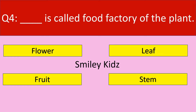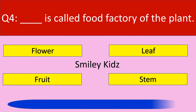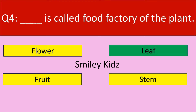Question number 4. Which part of the plant is called the food factory? Your options are flower, leaf, fruit, stem. Your time starts now. The correct answer is leaf. Leaf is called the food factory of the plant.